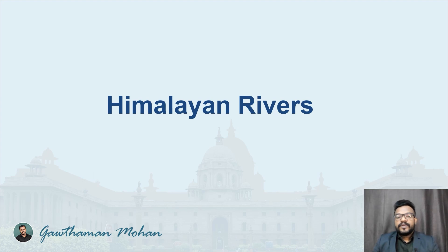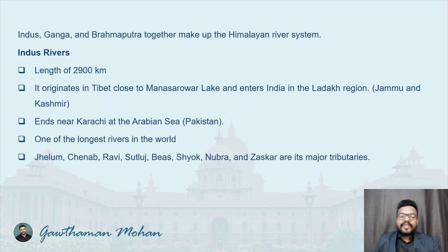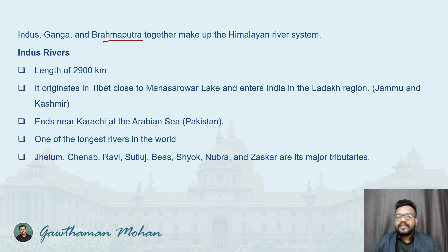In this video, let us try to understand about the Himalayan rivers — what significant information is related to them. Indus, Ganges, and Brahmaputra together make up the Himalayan river system. These three important rivers, along with all their own tributaries, constitute the Himalayan river system.